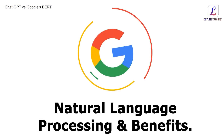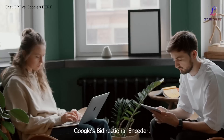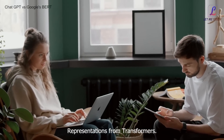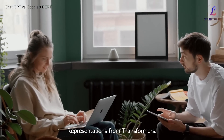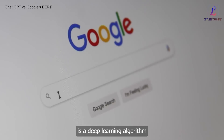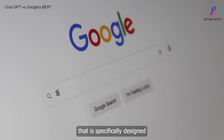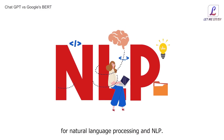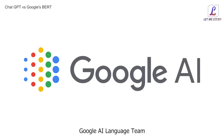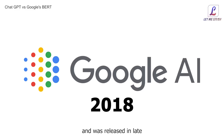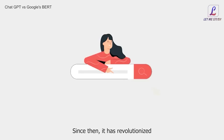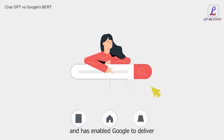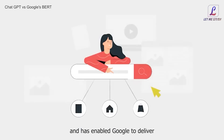Google's Bidirectional Encoder Representations from Transformers, or BERT for short, is a deep learning algorithm that is specifically designed for natural language processing. This model was developed by Google AI Language Team and was released in late 2018. Since then, it has revolutionized the way search engines work and has enabled Google to deliver better and more relevant search results.